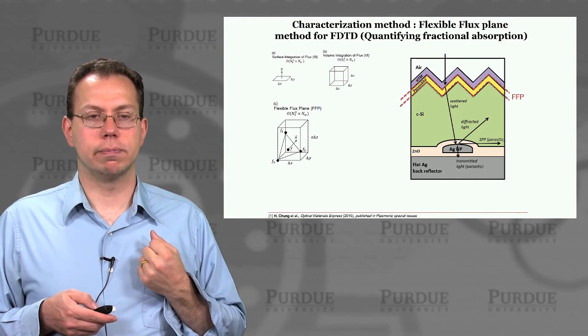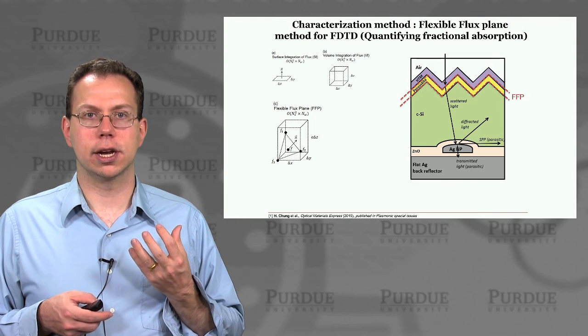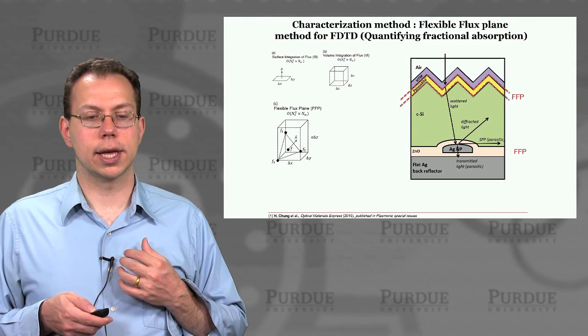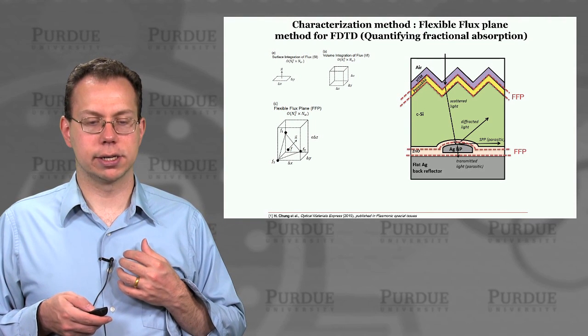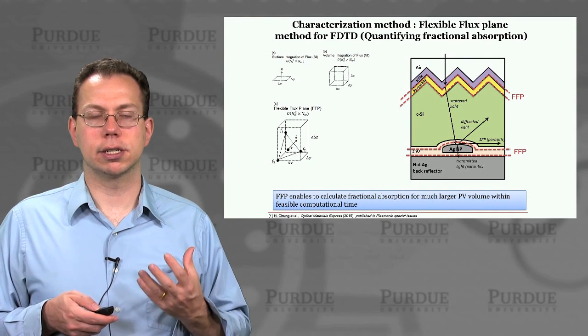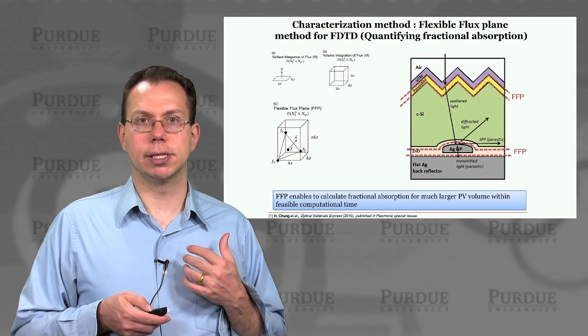And then, of course, you know from basic vector calculus that you can convert the volume integral into a surface integral. And so that is much faster, in fact, if done properly with the flexible flux plane method. So that allows you to do much larger PV volume, and the computational time is still reasonable.